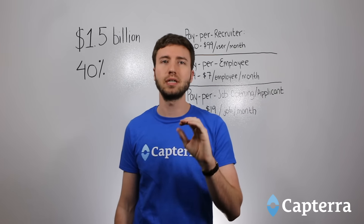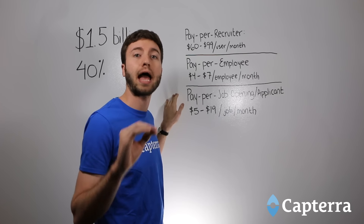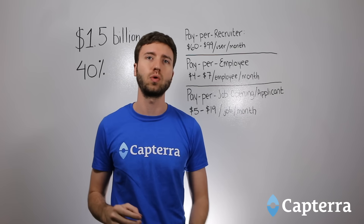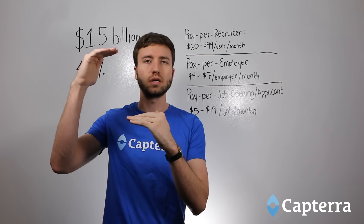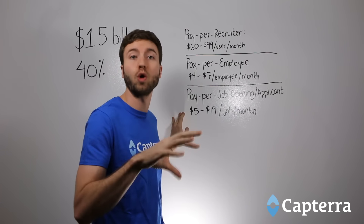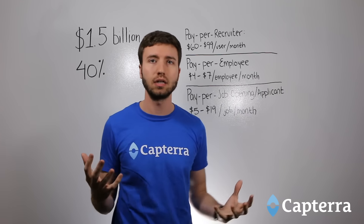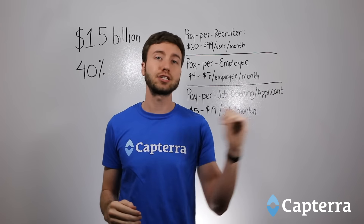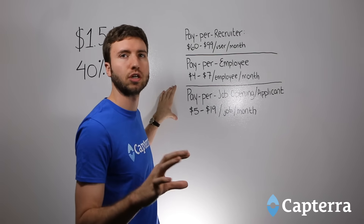The third model, even less common and typically used in conjunction with one of the first two, is pay per job opening or applicant. You're paying for the number of concurrent open jobs you have — so if you're looking for an HR specialist, a programmer, and a content marketer, you're paying for three open jobs. You can expect to pay about $5 to $19 per open job per month. The other model here is pay per applicant or candidate, where you're paying for the number of resumes kept in the system at any one time — typically 4 to 10 cents per resume.